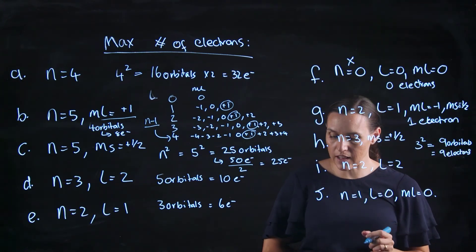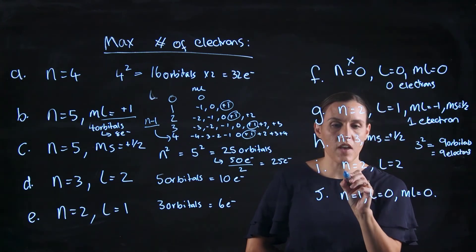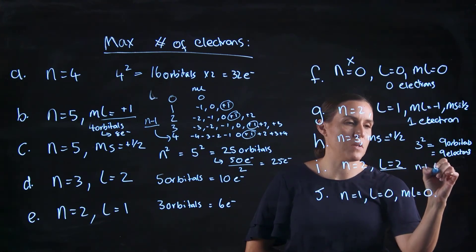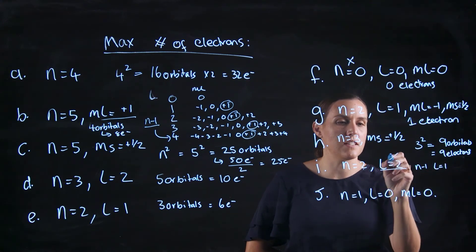n equals 2 and l equals 2. So if n equals 2, the maximum l value is n minus 1, so it would have to be l equals 1. So this isn't possible here.